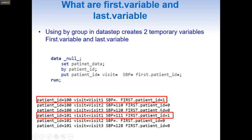For the next two observations of patient_ID 100, first.patient_ID equals zero, indicating those are not the first observation. For patient_ID 101, the first observation has visit one, SBP equal to 111, and first.patient_ID equal to 1. The other observations for patient 101 have first.patient_ID equal to zero. So whenever first.patient_ID equals 1, it indicates this is the first observation for that by-group.